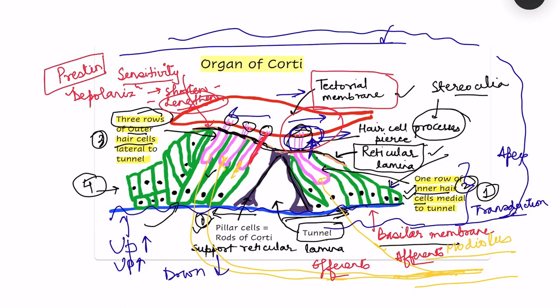In this short video on the organ of Corti, I have tried to cover the structure of the organ of Corti — how the cells are arranged and how outer hair cells change the sensitivity of inner hair cells. One more important thing: the basilar membrane's structure changes throughout the length of the cochlea. At the apex, the membrane vibrates more in response to low frequency sounds.